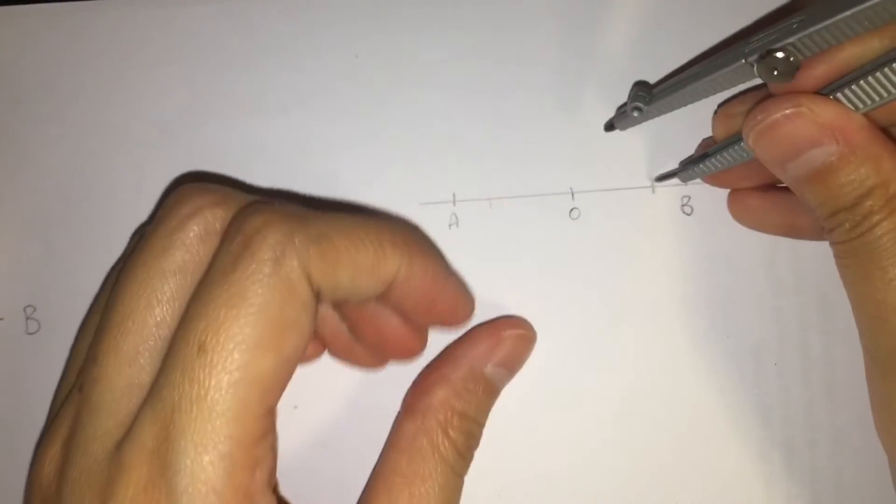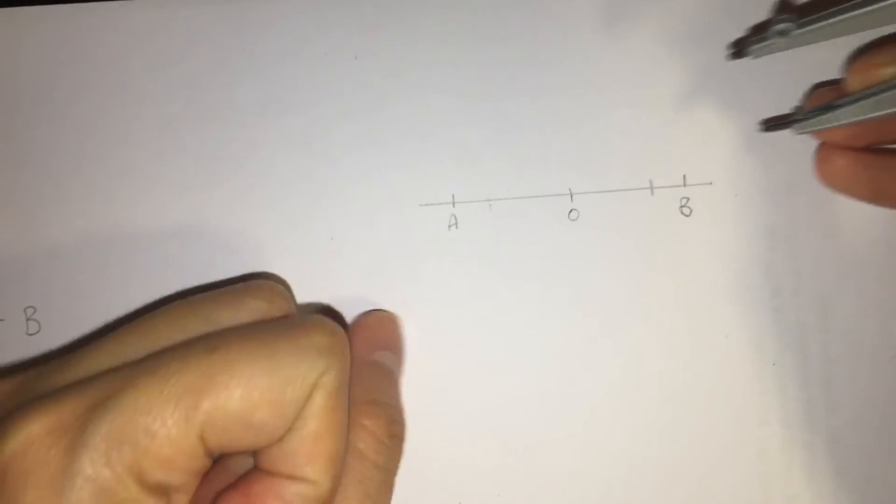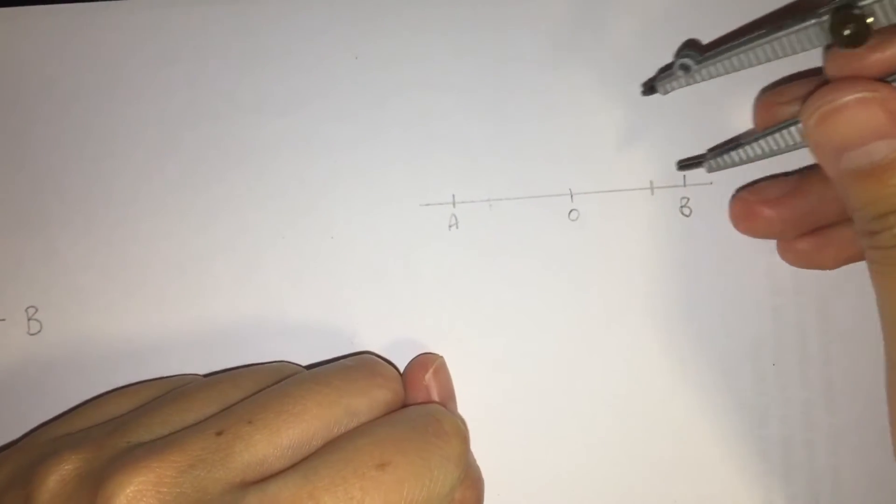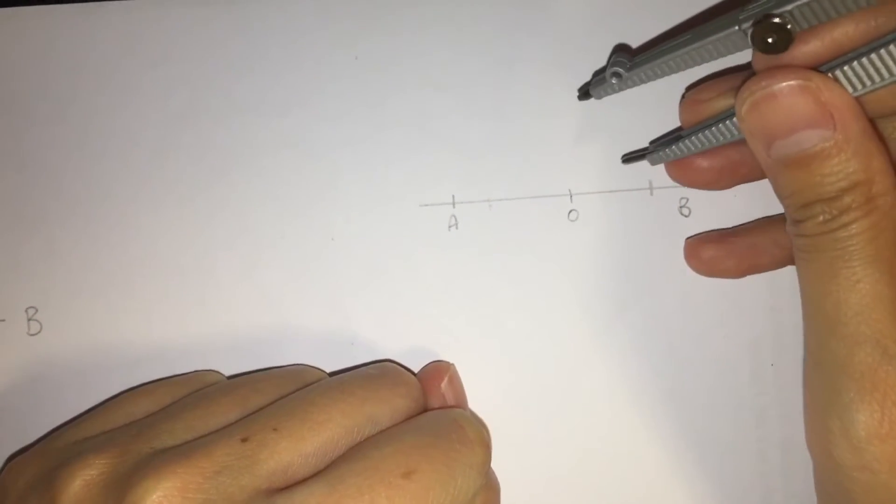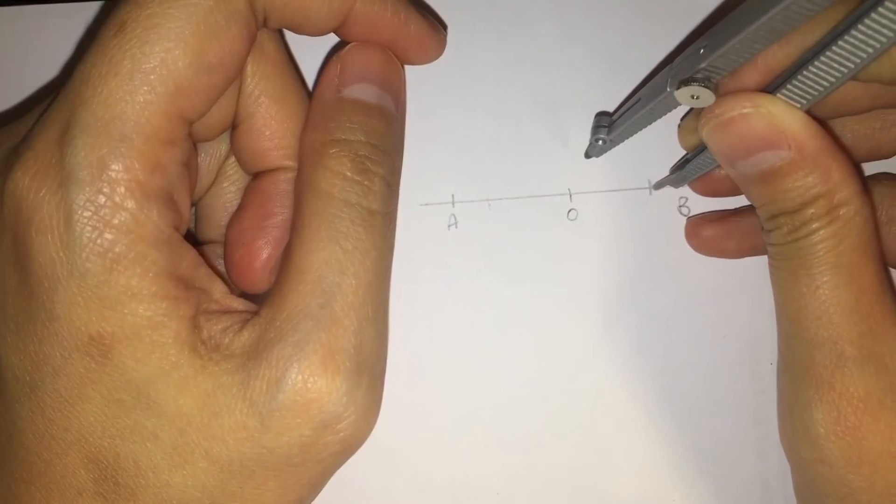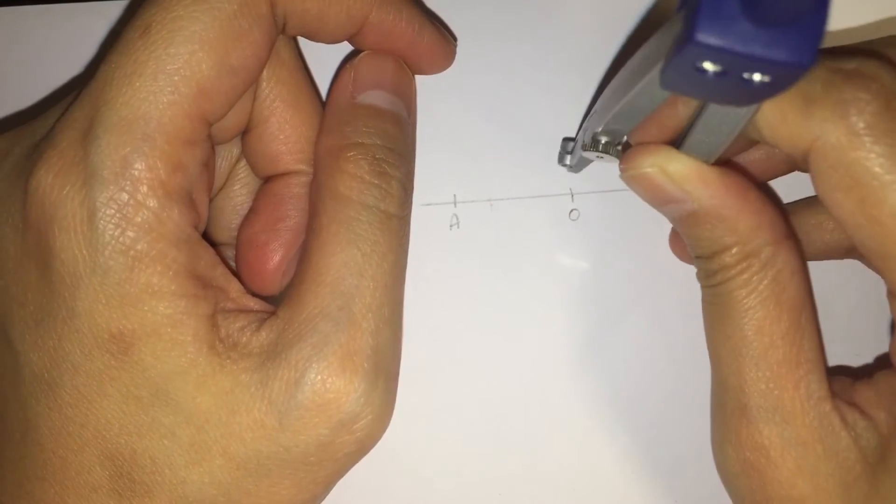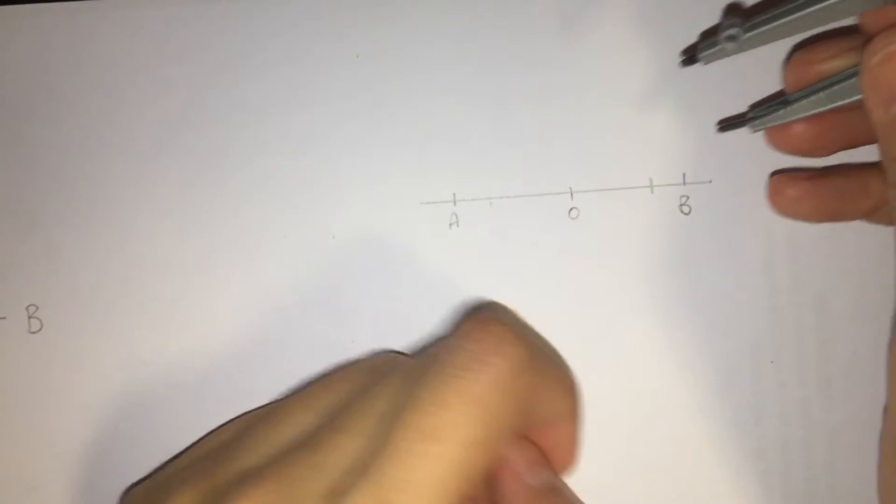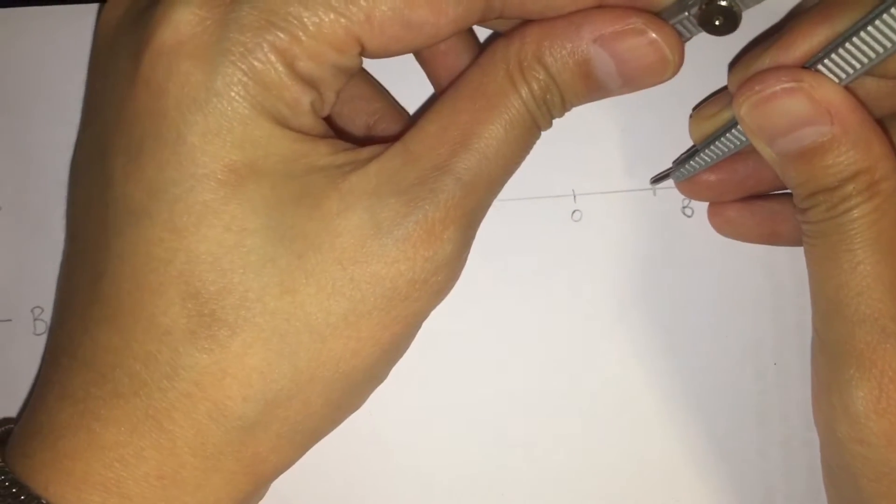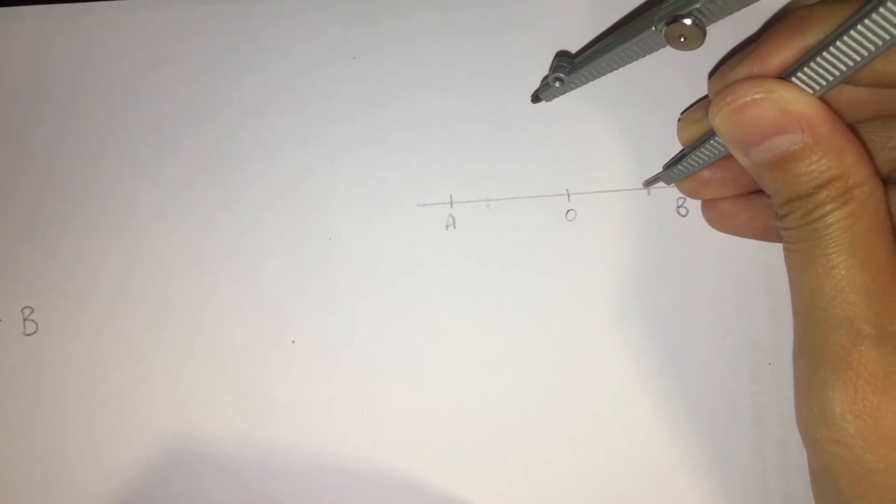And then if we go and bisect this just like we do for normal angles, we won't be able to get an intersection other than having an OA. So what we need to do is make it a little bit longer.